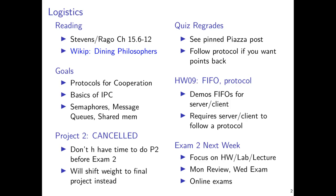A few announcements before we get underway. If you're reading along at home, you'll want to look at Stevens and Rago chapter 15. The first portion deals with several IPC mechanisms we've already discussed, and we'll review them in our first exercise. You'll also want to look at the dining philosophers problem — the Wikipedia article is fairly good, since we'll spend a fair amount of time discussing that model problem. Stevens and Rago lack it, as it's more of a classic theoretical problem, but knowing the background is useful.